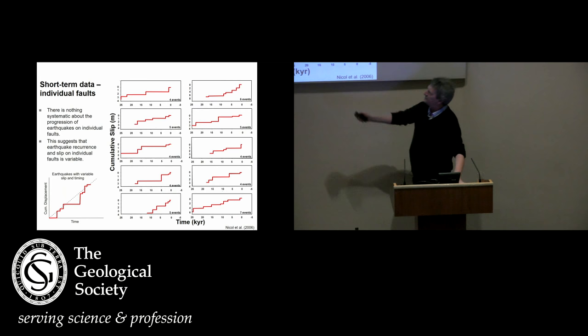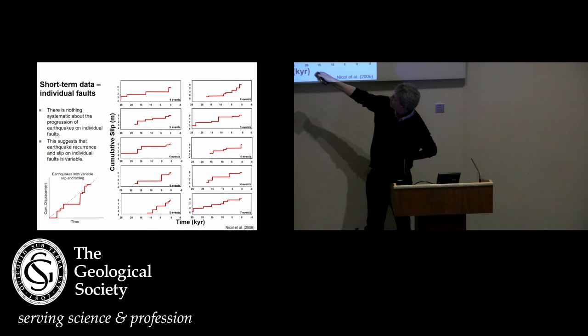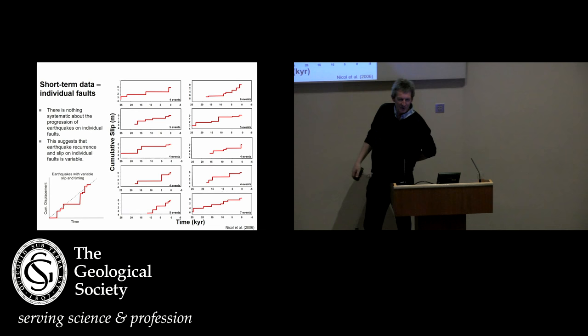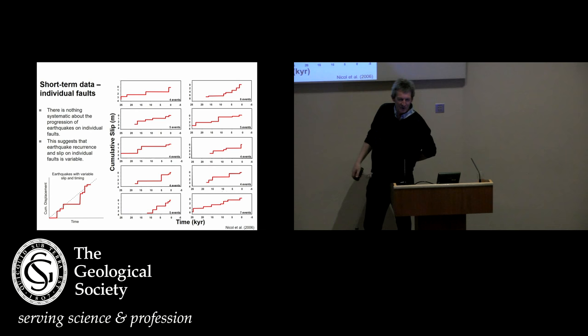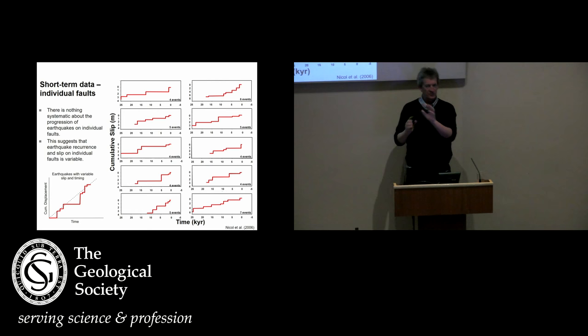Slip profiles are all different, and sometimes incredibly variable and complicated. This fault stopped moving for 10,000 years for some reason, then moved with a big earthquake and then a couple of small ones. Another fault was dead for about 15,000 years and then had a couple of earthquakes. It's a great deal more complicated than you'd like to think — it's not systematic. But when you look far enough away from these systems, they start to look a little bit more simple and straightforward.